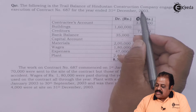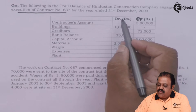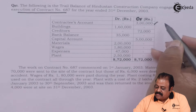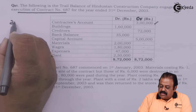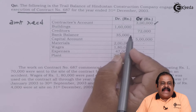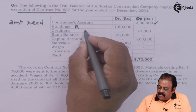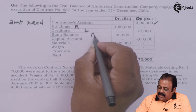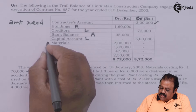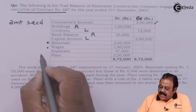The following is the trial balance of Hindustan Construction Company, engaged on execution of contract number 687 for the year ended 31 December 2003. The contract account shows rupees 3 lakhs on the credit side — that is the amount received from the contract. Building is an asset recorded on the asset side; creditors is a liability on the liability side; bank balance is an asset; capital is a liability; material total is 2 lakhs; wages total is 1 lakh 80,000; and expenses are 47,000.